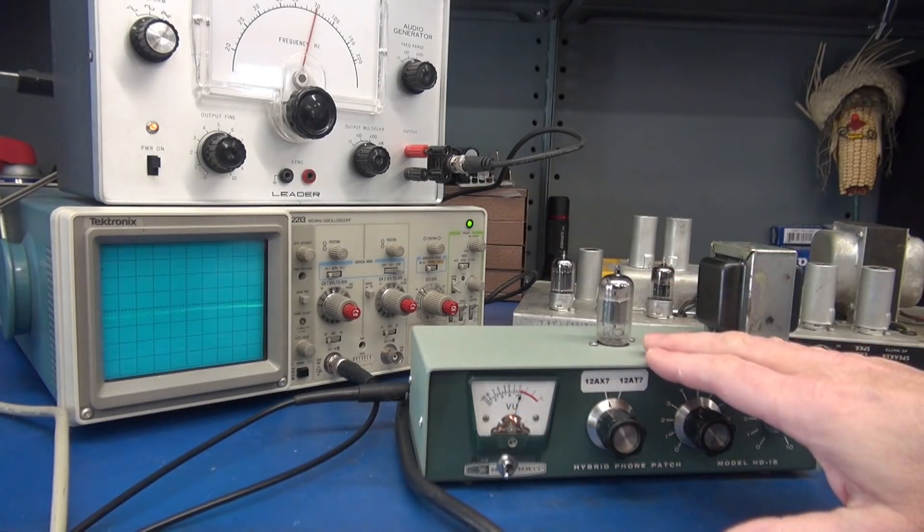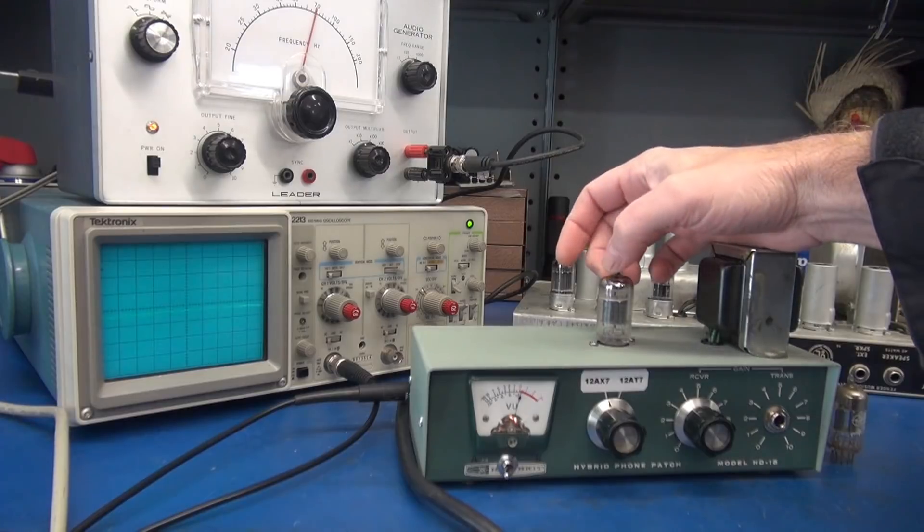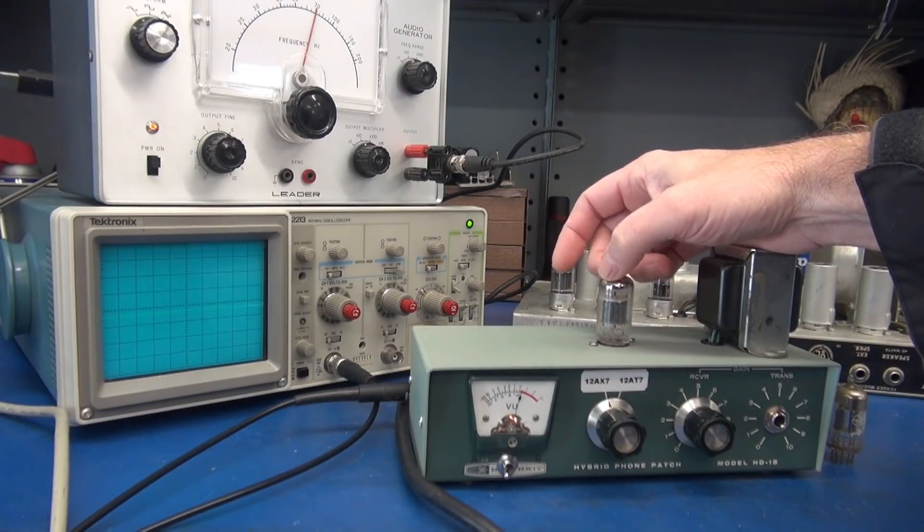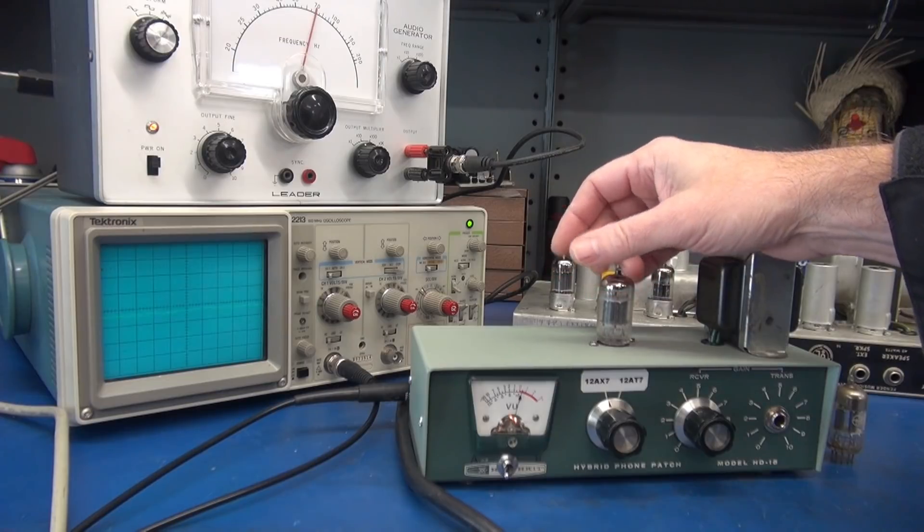So right now, the tube is idling. We're watching section A on the oscilloscope. So if I were to tap on the tube, I should be able to see if there's any microphonics on the scope. Now, I do not see any, which is a good sign.